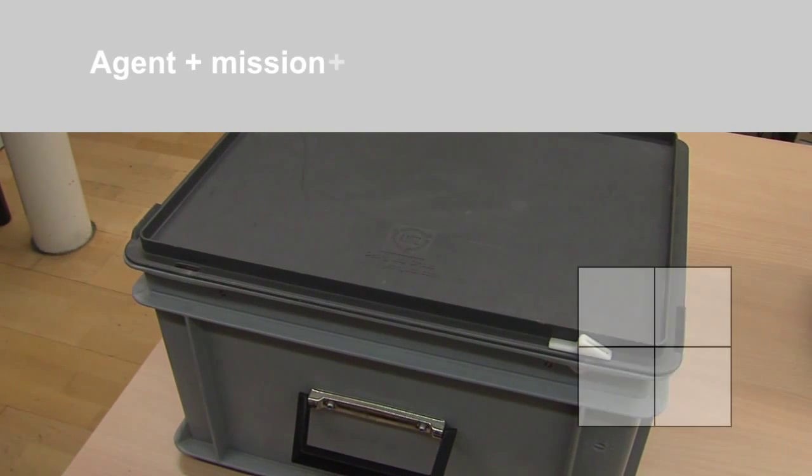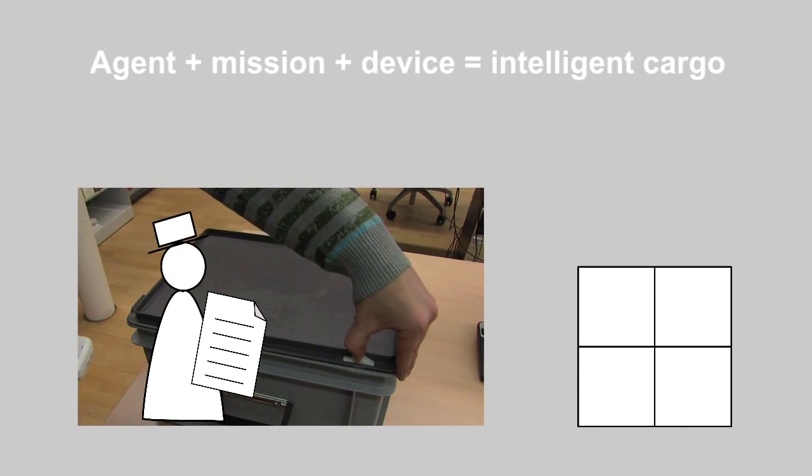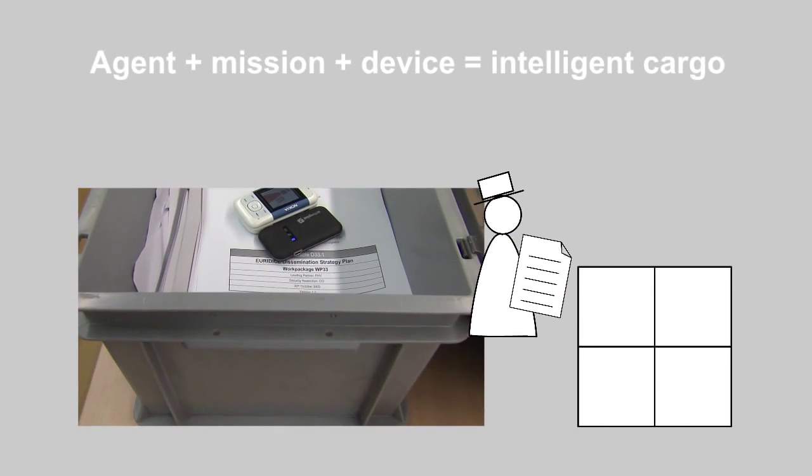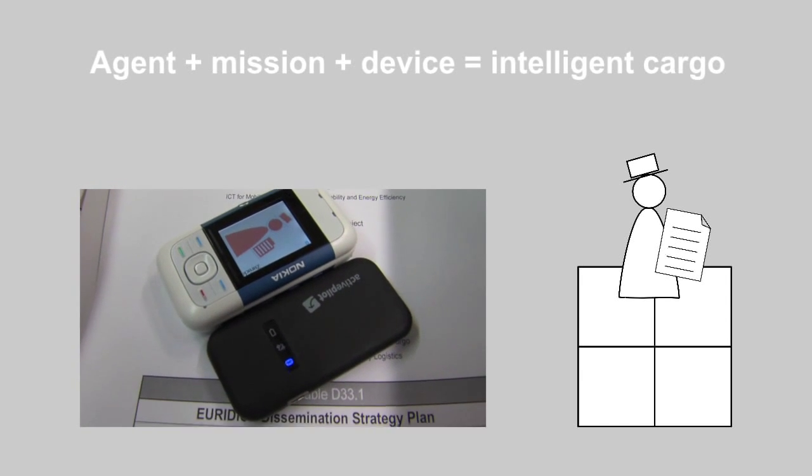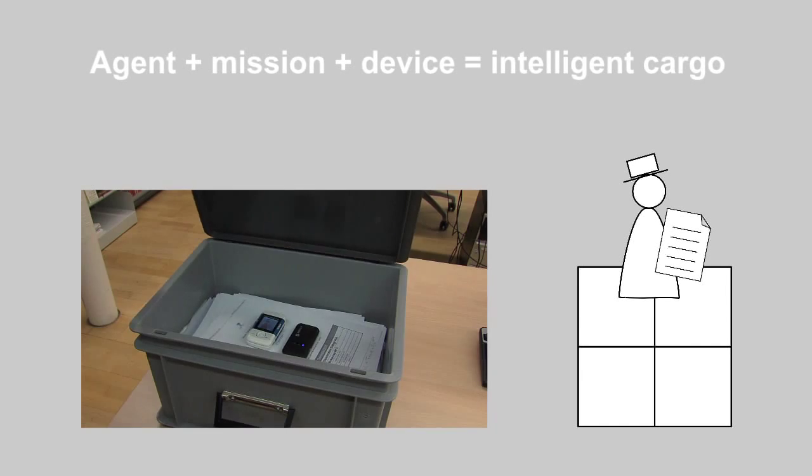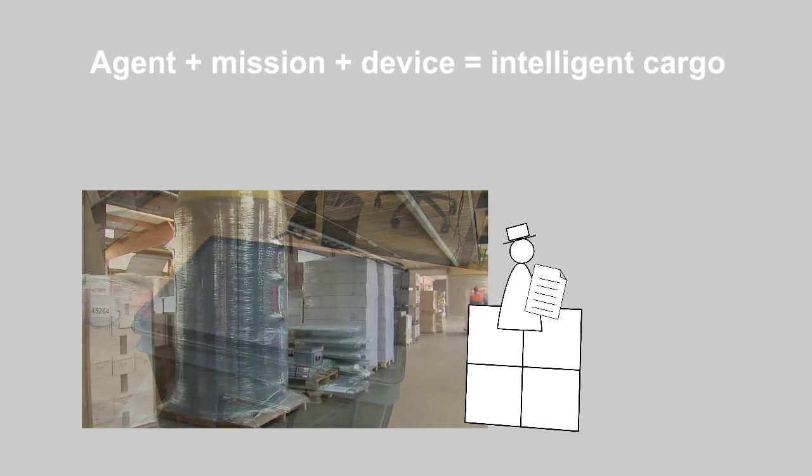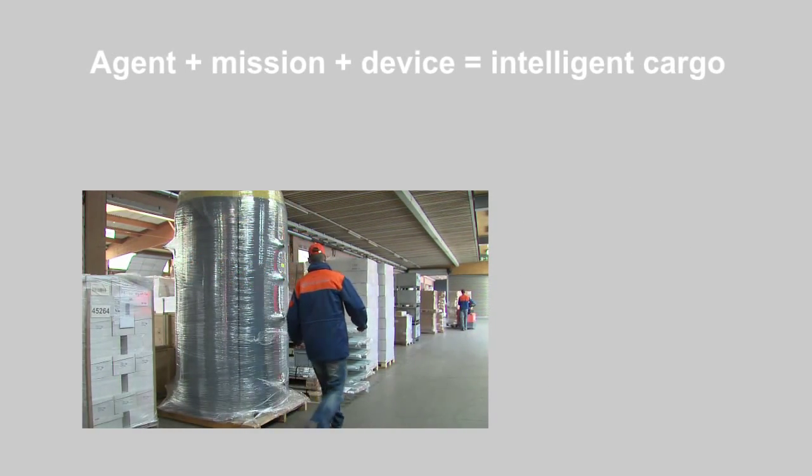Eventually, the cargo is ready to be loaded for transport and the agent is ready to start its mission. At this time, the agent is transferred to a smart device placed close to the item of cargo. This transforms the cargo into a piece of intelligent cargo.